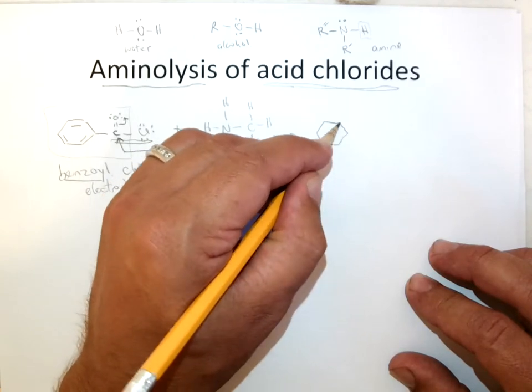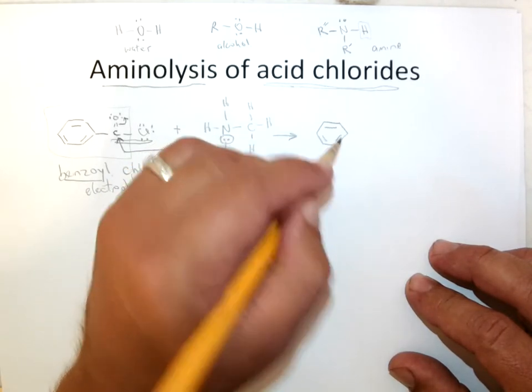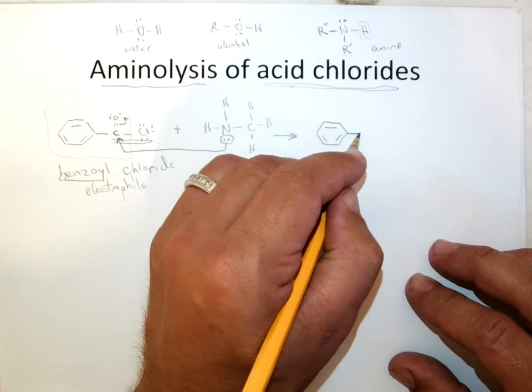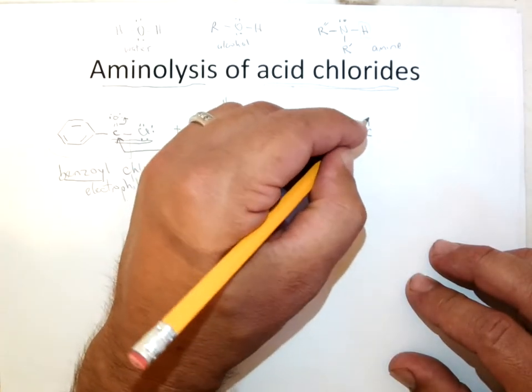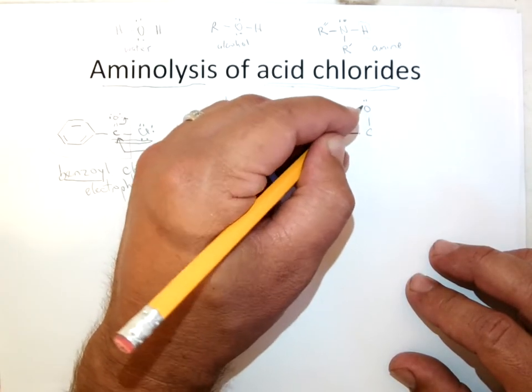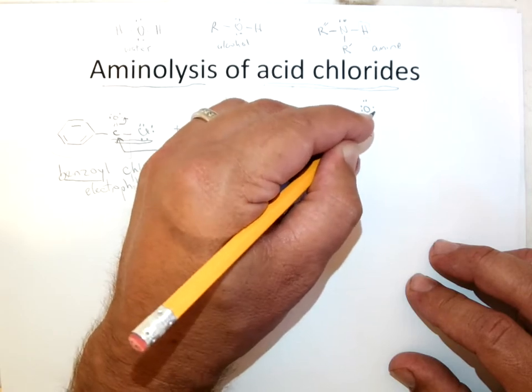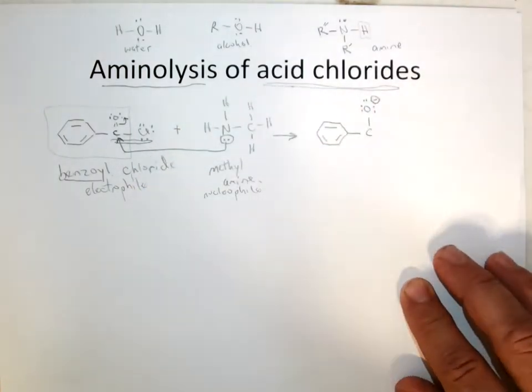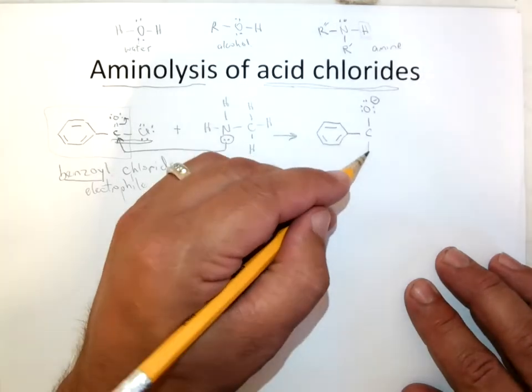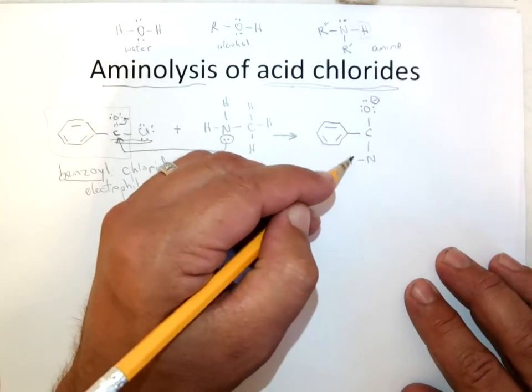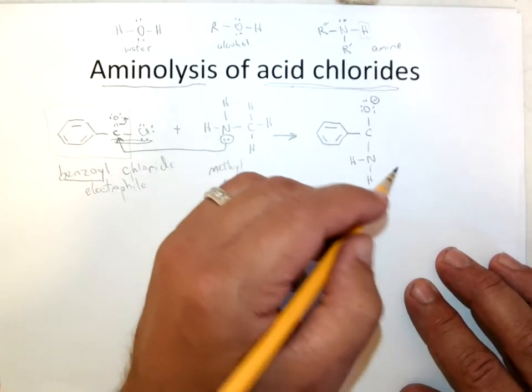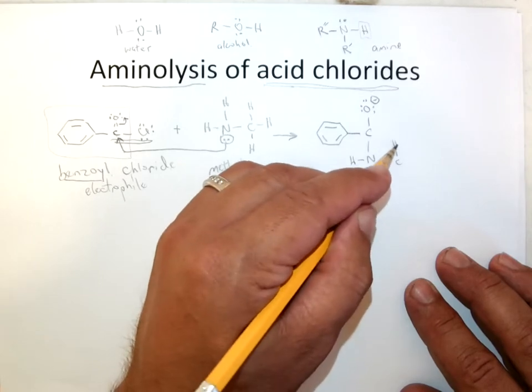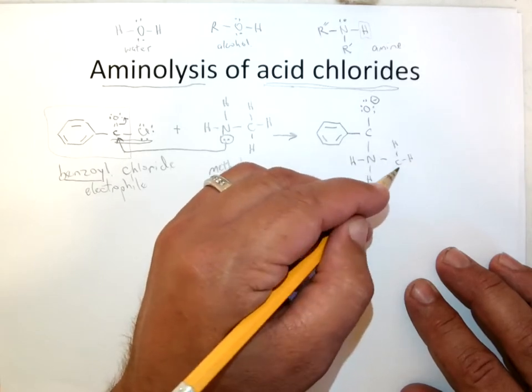So phenyl groups along for the ride. Make the next hexagon, throw in the double bonds. The carbonyl now is no longer double bond because that pi bond got pushed off onto the oxygen when the nucleophile came in. And now you have the nitrogen with two hydrogens and a methyl.